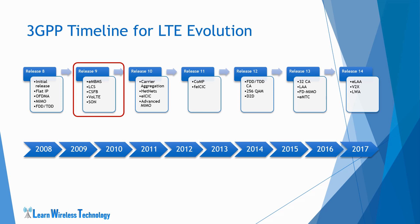Release 9 was the next release, introduced in 2009. It included new services such as eMBMS (Enhanced Multimedia Broadcast Multicast Service), self-organizing networks, location services, and improvements in voice solutions such as CSFB and Voice over LTE.